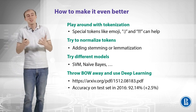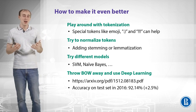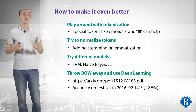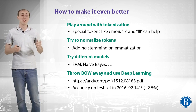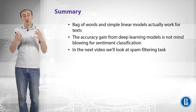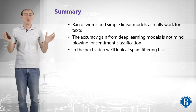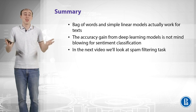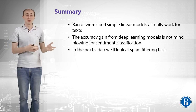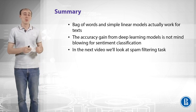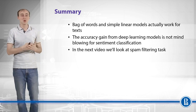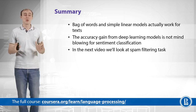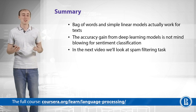That 2.5% might seem like a small improvement, but it can actually matter in tasks where even 1% improvement means a lot of money — like ad click prediction. To summarize: bag of words with simple linear models works well, and adding 2-grams is essentially free and gives you a better model. The accuracy gain from deep learning is not mind-blowing, but it is there and worth considering. In the next video, we will look at spam filtering, another text classification example that can be handled in a different way.